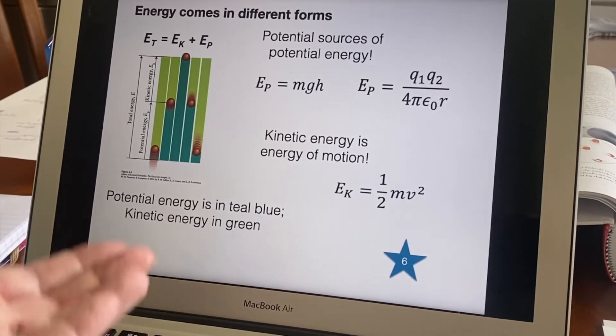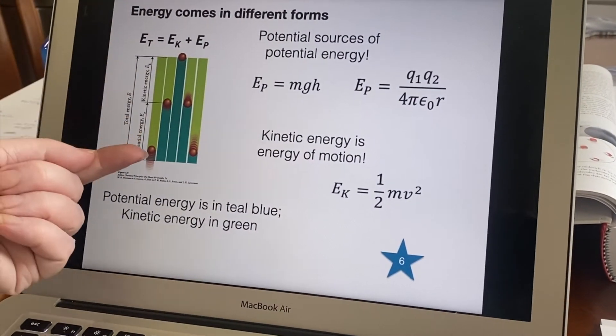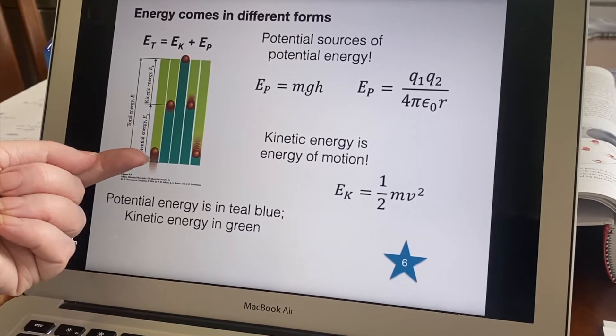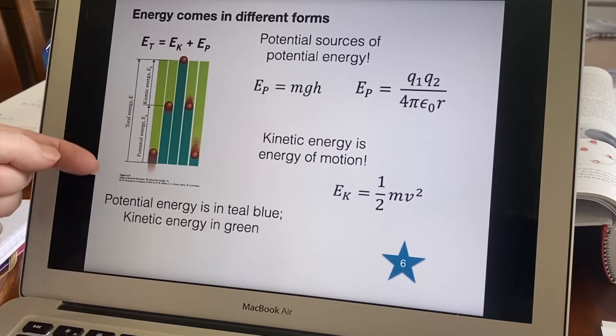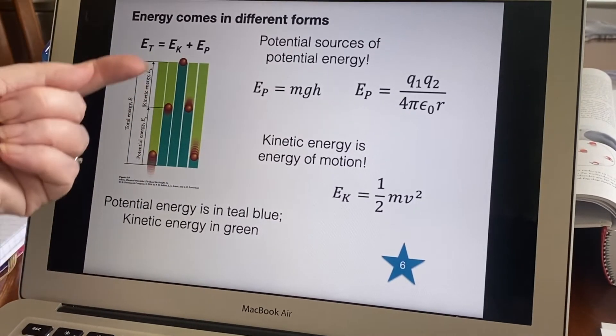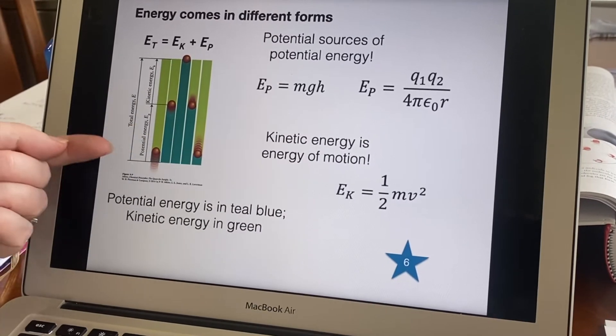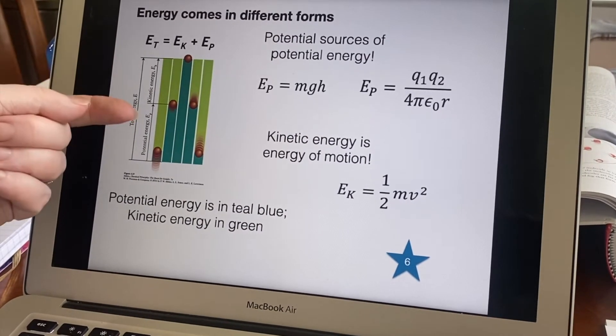So it has mostly kinetic energy and very little potential energy because it's not very high off the ground. You can see the potential energy is in this teal blue and the kinetic energy is in green. What we're trying to get across with this graph is that the total energy is the same but changes form.